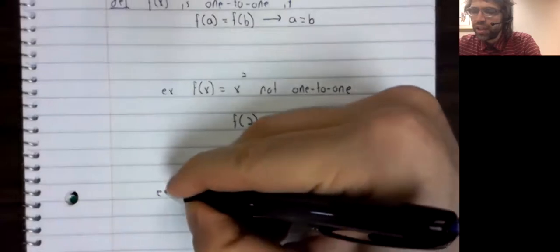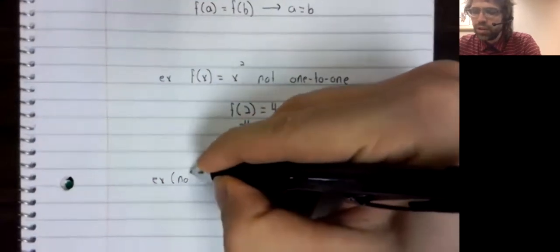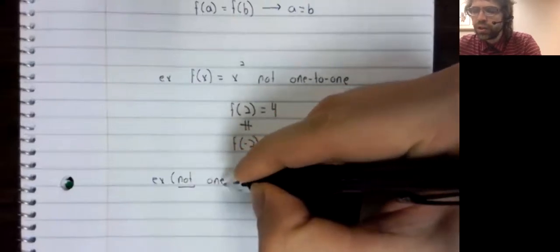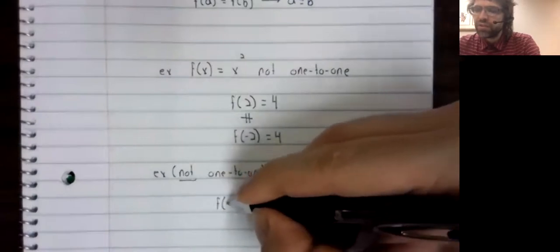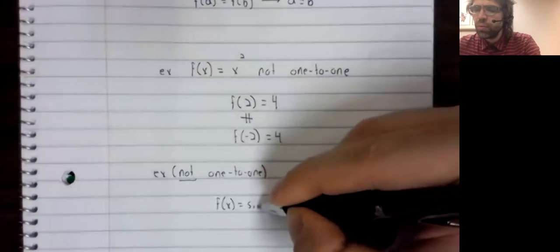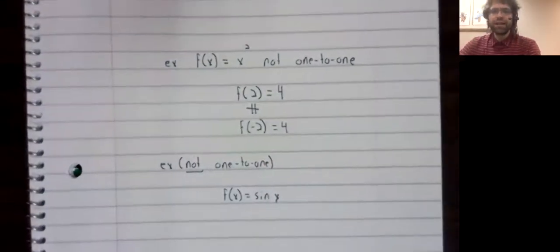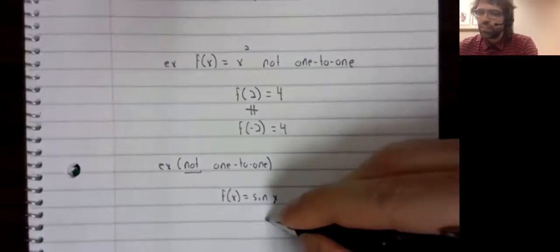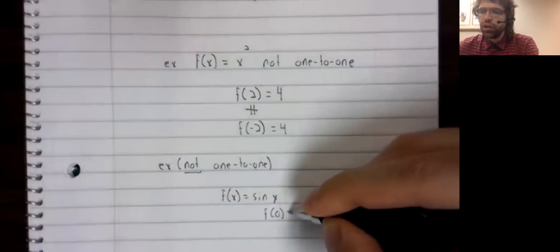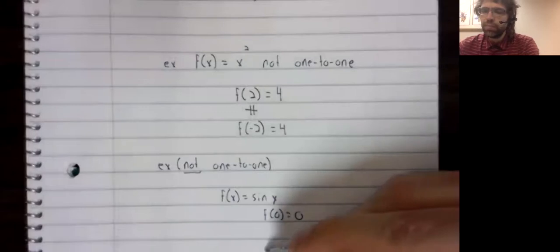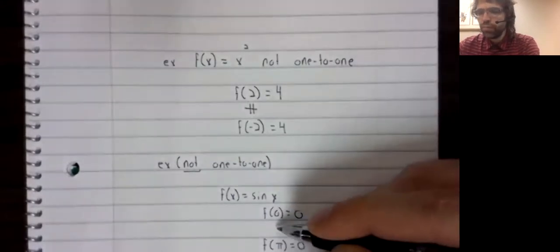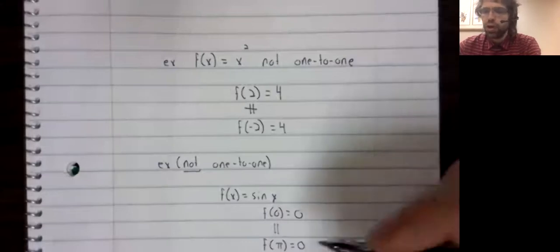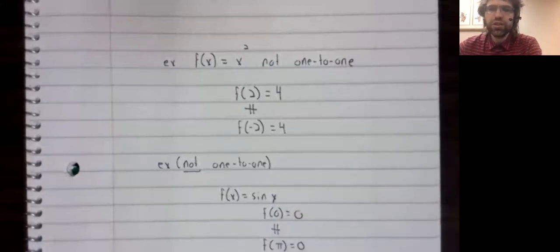Another example that is not one to one is f of x equals the sine of x. f of zero equals zero, and f of pi also equals zero. And of course, zero is not equal to pi.